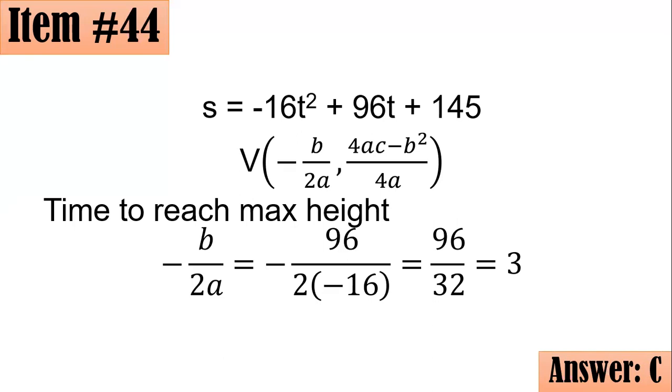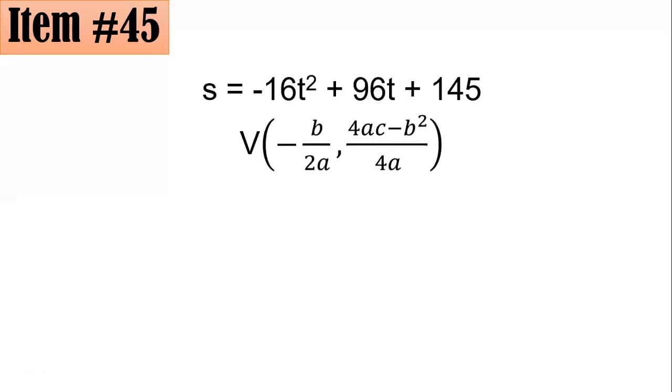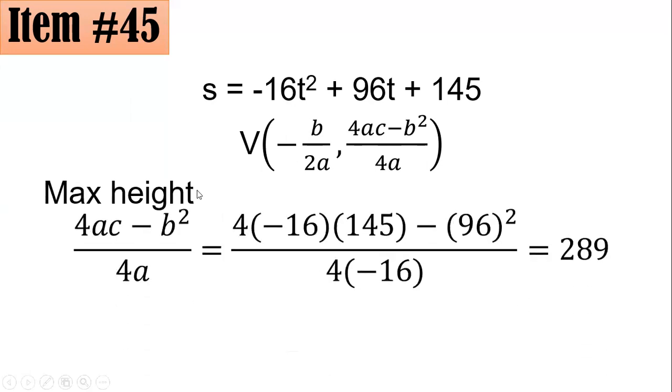And the follow-up question is, for item 45, what is the maximum height? So you have two options. The first option is, you will substitute the 4ac minus b squared. You will look for the value of 4ac minus b squared all over 4a. And by substitution, that's 4 times negative 16 times 145 minus b squared, that's 96 squared, all over 4a, 4 times negative 16. Using your calculators, it will give you 289.